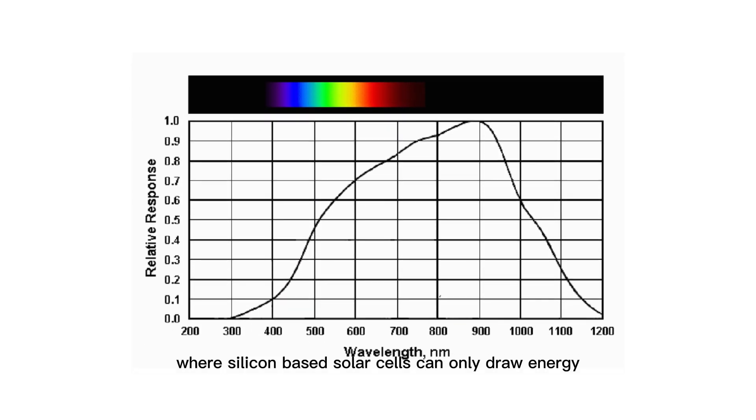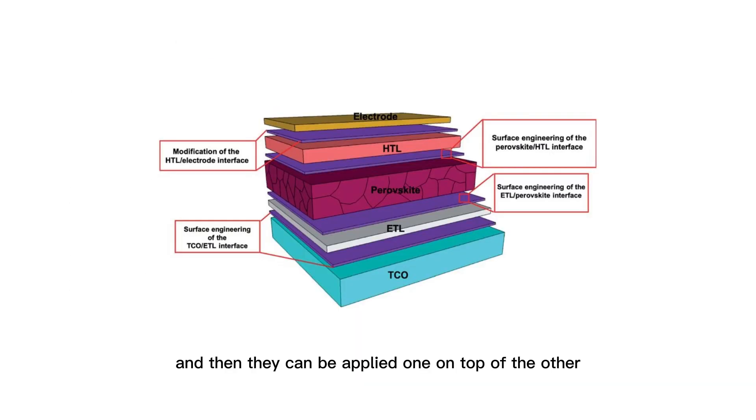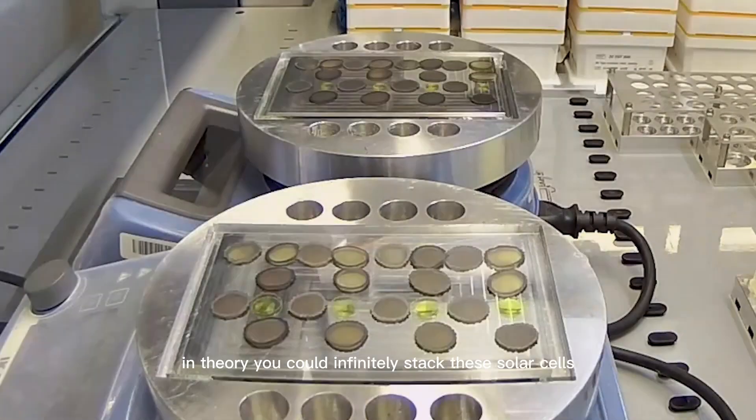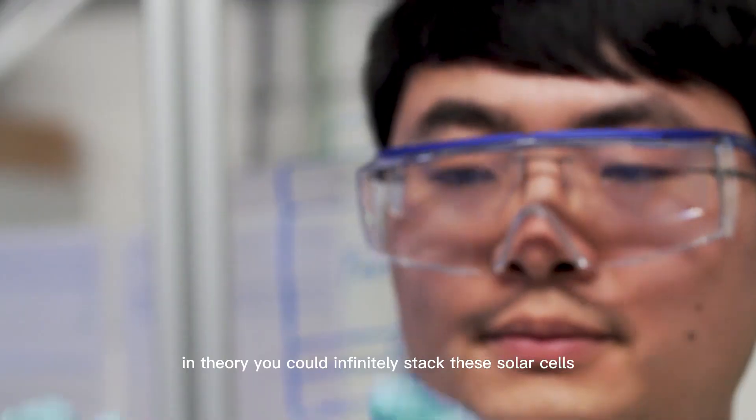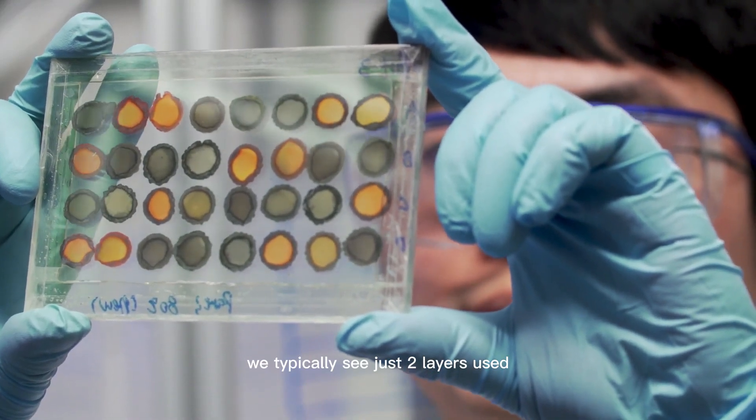Where silicon-based solar cells can only draw energy from the higher or redder end of the energy spectrum, perovskites can be adjusted to capture different energy bands, and then they can be applied one on top of the other to capture as broad of a spectrum as possible. In theory, you could infinitely stack these solar cells, but in practice we typically see just two layers used.